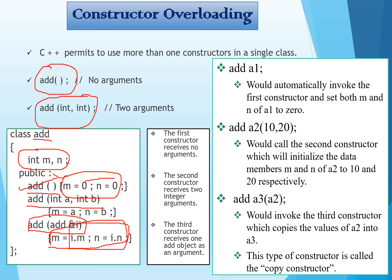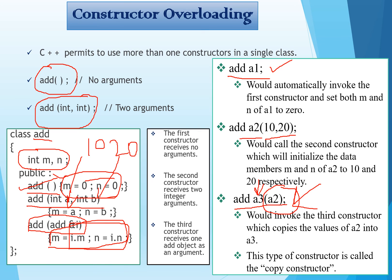In the main program, when we create add a1, the first constructor is invoked automatically, setting both M and N of a1 to zero. When we create add a2(10, 20), the second constructor is called, assigning 10 to a and 20 to b. When we create add a3(a2), the copy constructor is called, passing the values of object a2 — which are 10 and 20 — and assigning those values to M and N of a3 respectively.